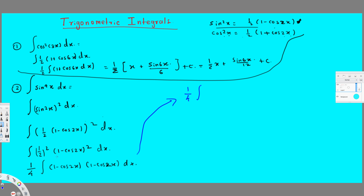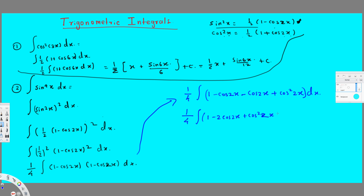So 1 over 4 times the integral: multiplying out (1 - cos2x)², we get 1 - cos2x - cos2x + cos²2x, which simplifies to 1 - 2cos2x + cos²2x. Again we have cos²2x inside, so we need to apply the identity again.